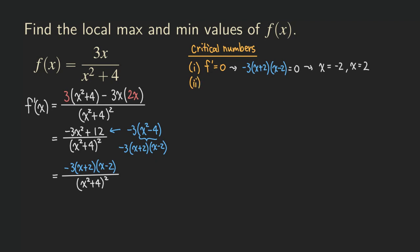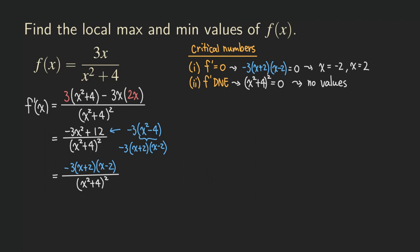The second case is that f prime does not exist — that's when the denominator equals zero. So we consider when x squared plus four, squared, equals zero. When considering only real numbers x, we cannot get a real solution for this equation. So there are no additional critical numbers. The only two critical numbers we have are negative two and positive two.